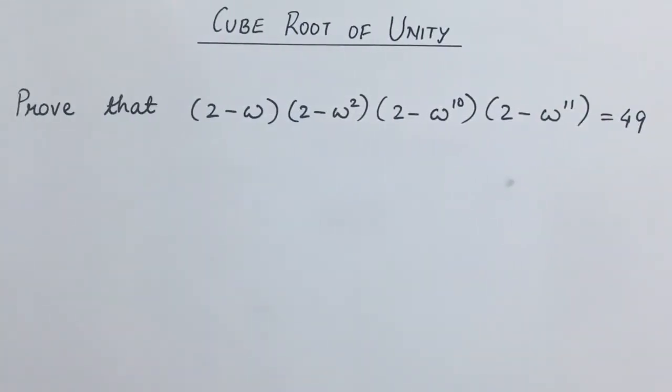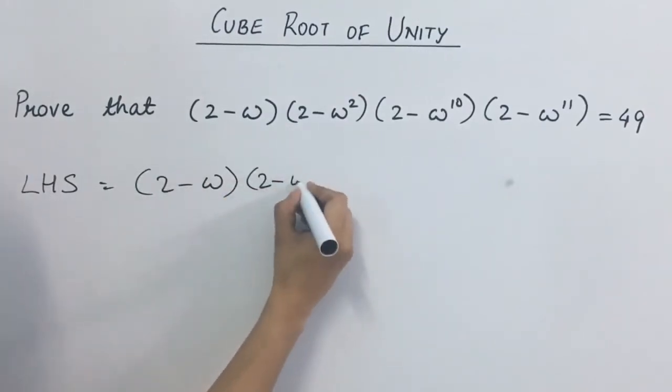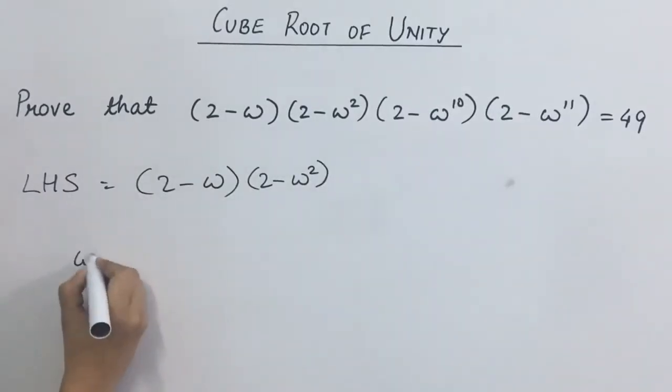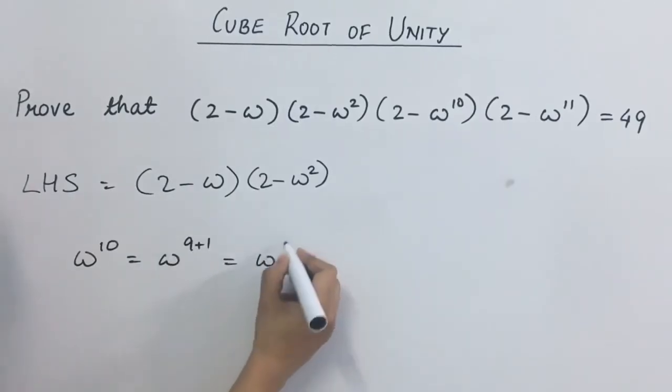In this, let us see a different kind of question. Prove that this value is equal to 49. Yaha par we do not have to directly multiply. Bracket open nahin karna hai aur multiply nahin karna hai. First, we are going to simplify the left hand side of this equation. This can be written as 2 minus omega, 2 minus omega square. Omega 10 can be written as omega 9 plus 1, that is omega 9 into omega and this is a multiple of 3.